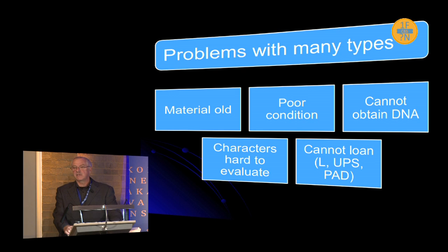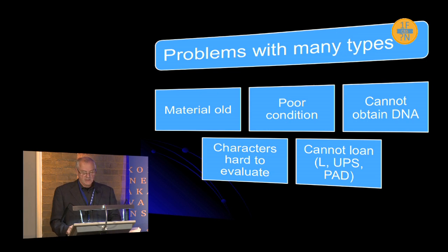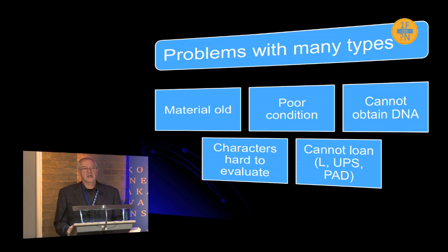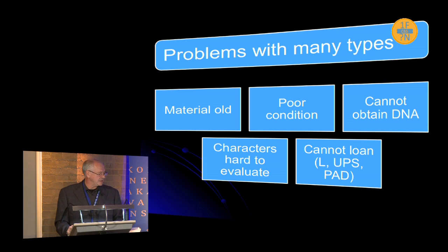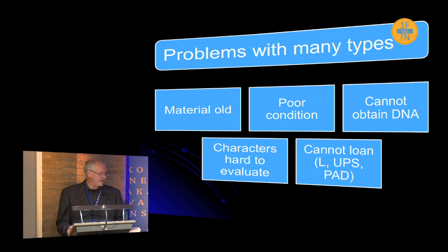There's a problem with many types. As mycologists we all try to study types, but the material is often very old and in poor condition. Most of the time you cannot extract DNA — I think specimens more than 15 years old it's very hard to get any DNA out of them. Also, you're not allowed to do it. The characters are hard to evaluate, and many herbaria make it very difficult to borrow specimens.